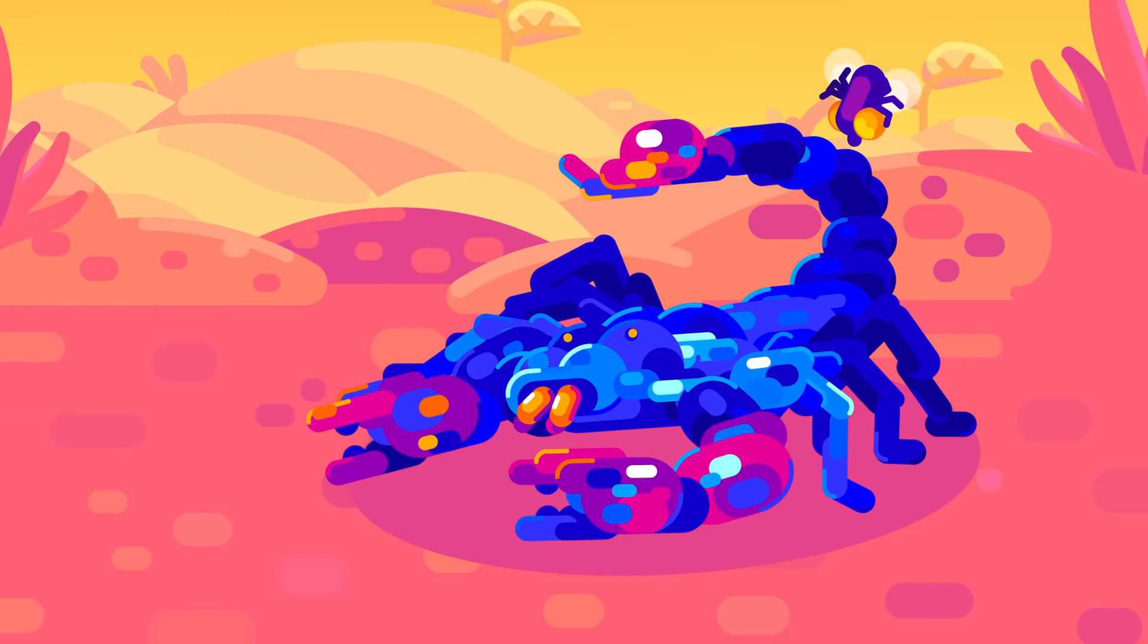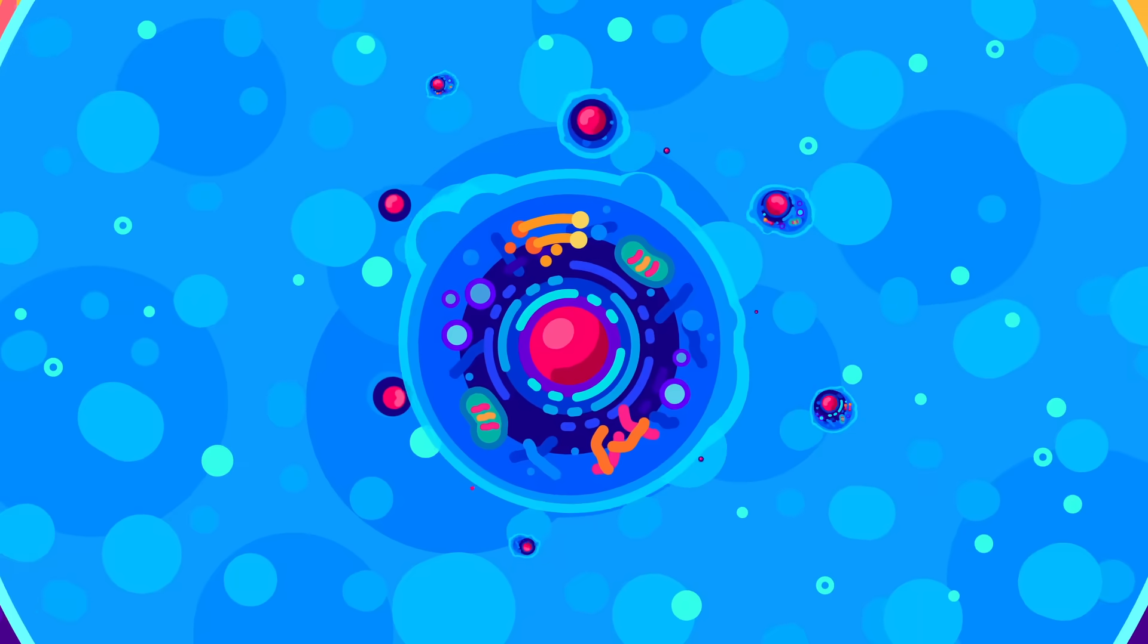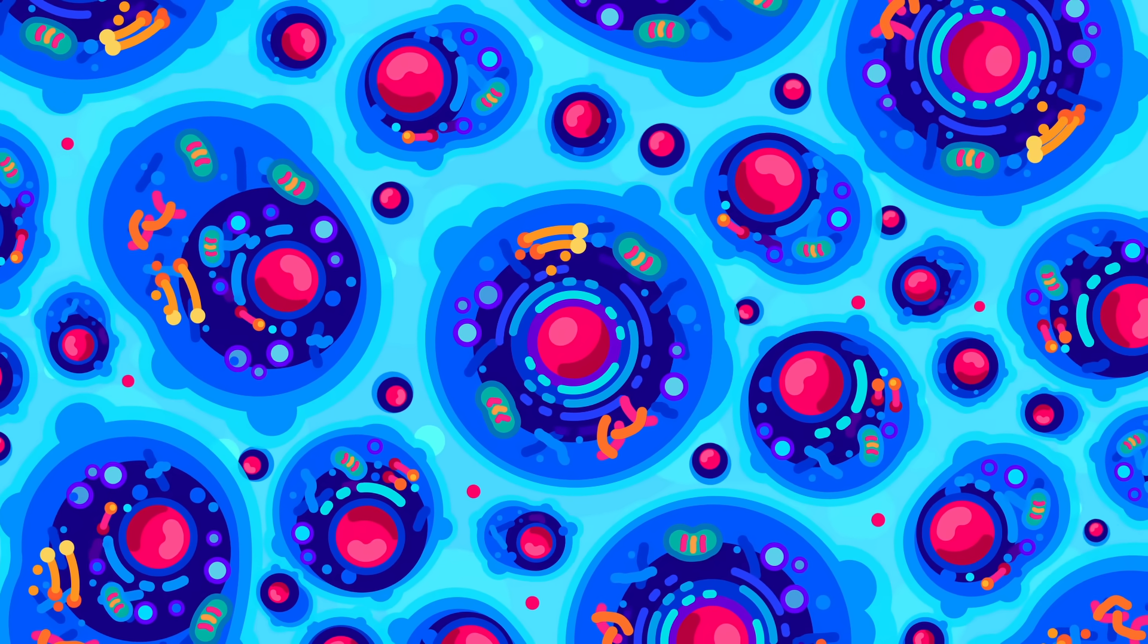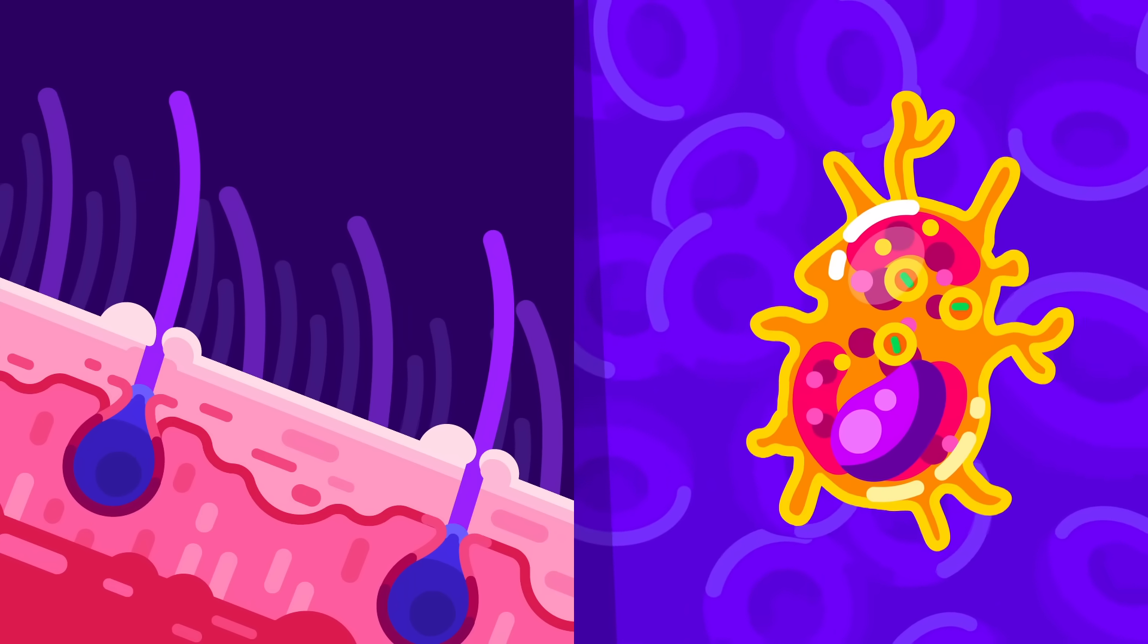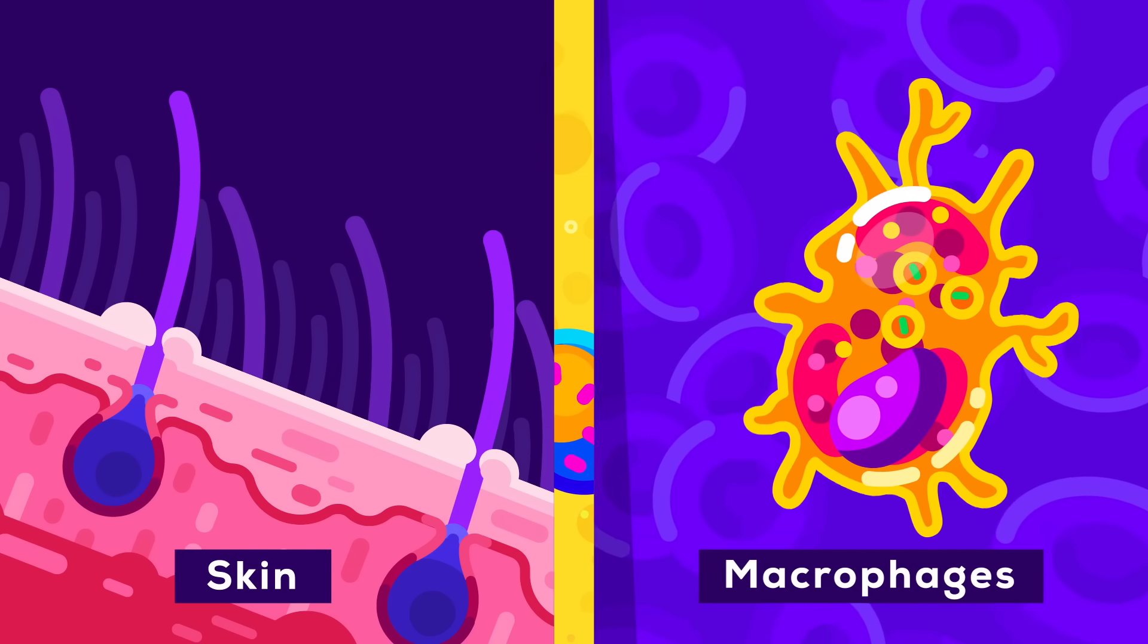Every living being needs to fight off other living beings that want to feast on them. So as multicellular life evolved over billions of years, it came up with ways to defend itself. Today, humans have a sophisticated defense network, like physical barriers, defense cells, and weapons factories.